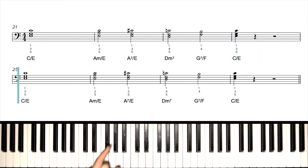Second line down, exactly the same thing. So C over E, A minor over E, A7 over E, D minor seven, G7 over F, C over E. So just like the right hand, let's try this at our medium tempo now first, then we'll go to full tempo.